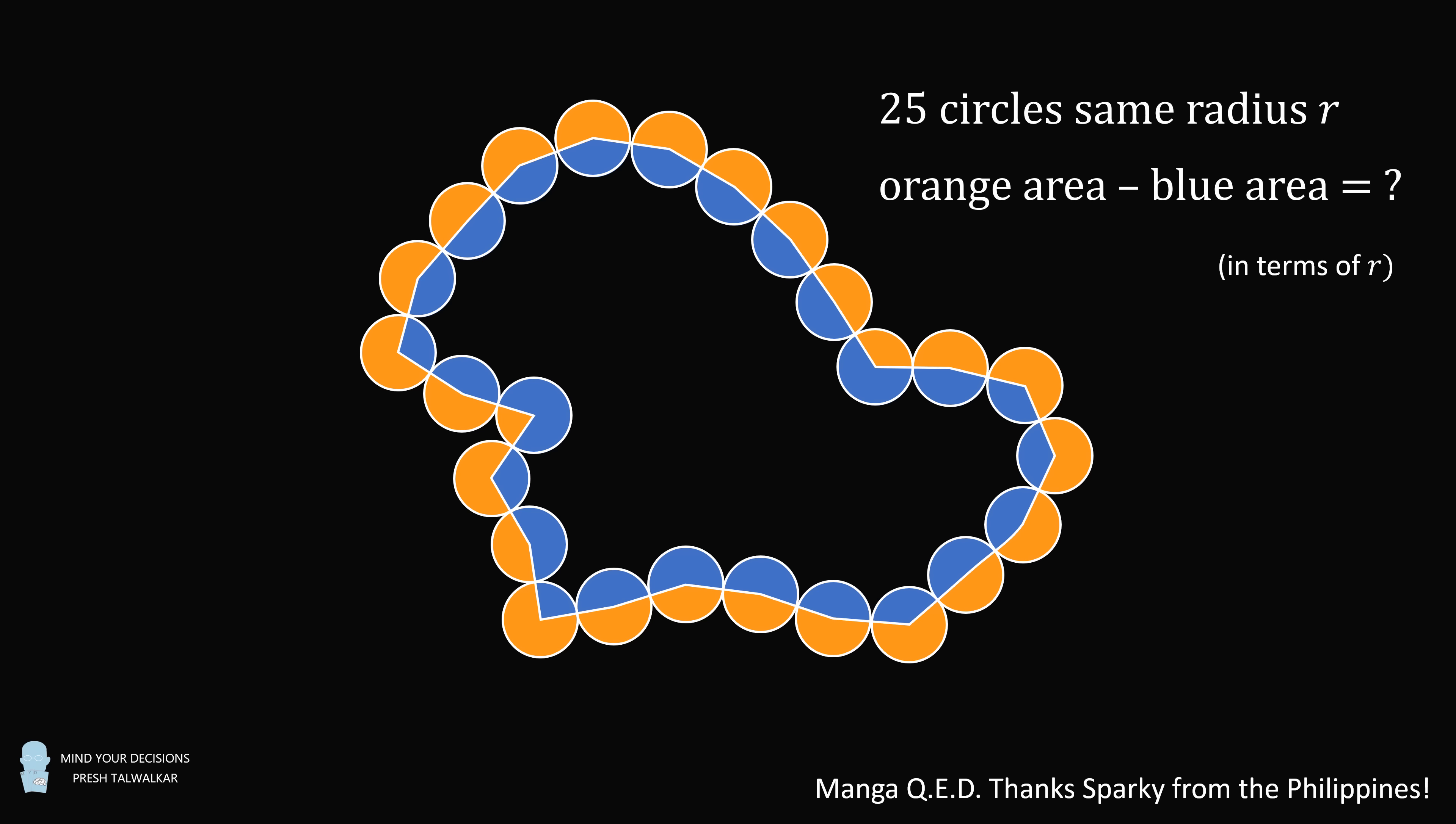So in almost all puzzles with a question like this, you'll find that the two shaded areas are equal to each other, so their difference would be equal to zero. But that is not the case in this puzzle, and that's why it's one of the most wonderful puzzles I've come across. So here's how we can solve it.